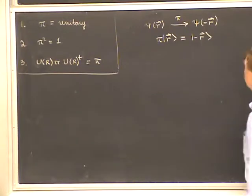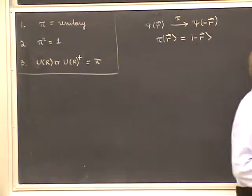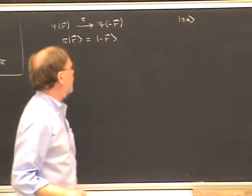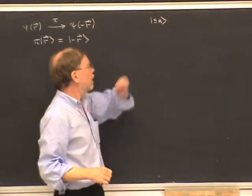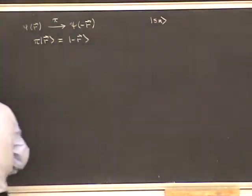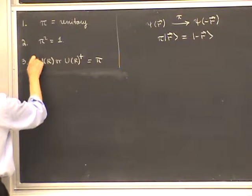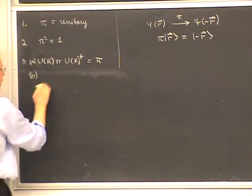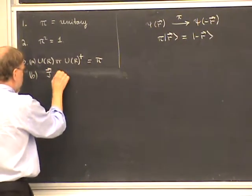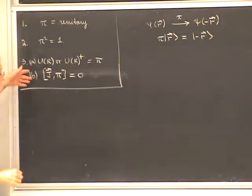Next, we took the case of a particle with spin, ignoring spatial degrees of freedom. The Hilbert space is spanned by basis kets |S, M⟩, where S is the spin of the particle and M runs from minus S to plus S. Property three — that parity should commute with rotations — means parity is a scalar operator, which must commute with all three components of angular momentum. These are conditions 3A and 3B, which are equivalent to one another.